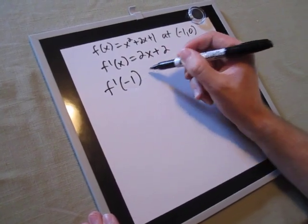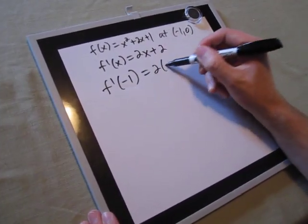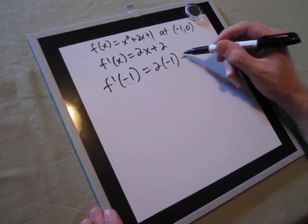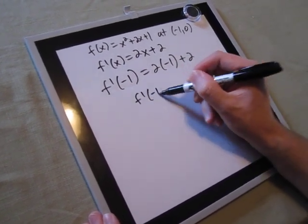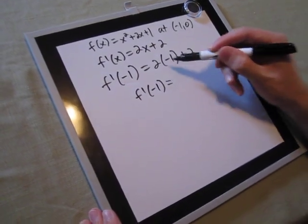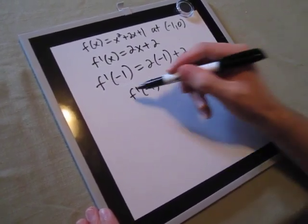So we will evaluate f'(-1), which is 2(-1) + 2. Simplifying that expression, we get -2 + 2, which equals 0.